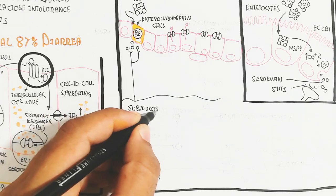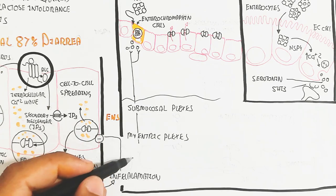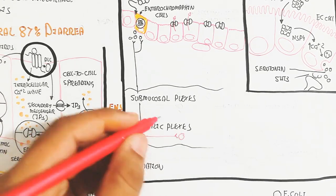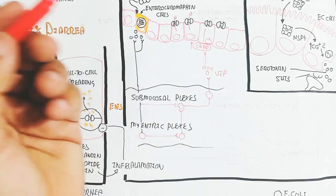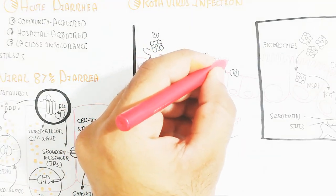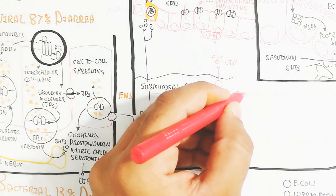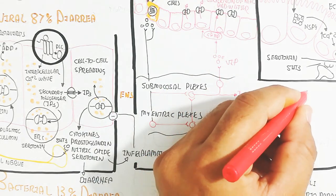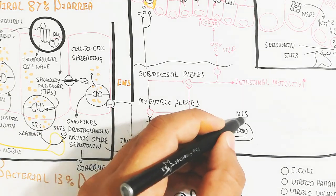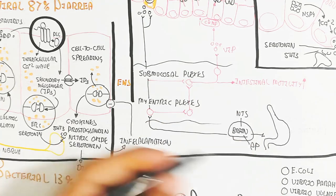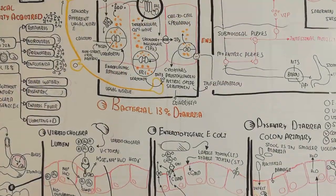This triggers intestinal motility through the myenteric plexus. The brain contains NTS and AP (nucleus tractus solitarius and area postrema region), which trigger the myenteric plexus, leading to submucosal plexus activity in the stomach, causing vomiting.